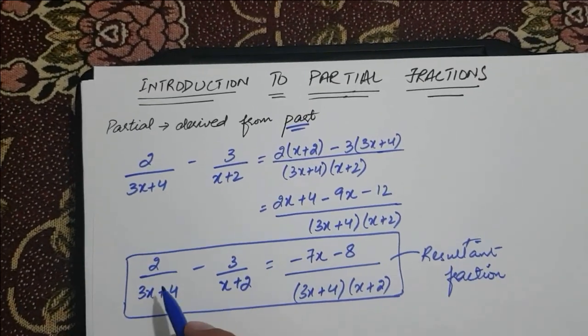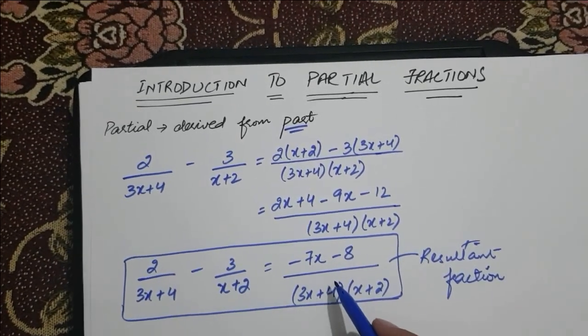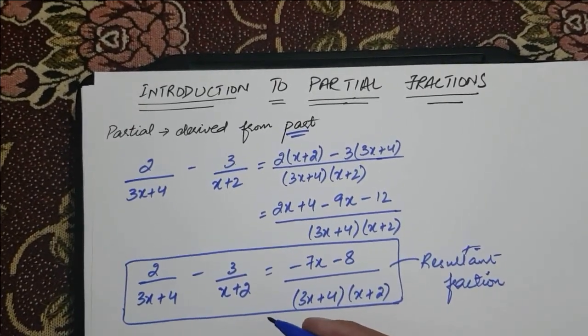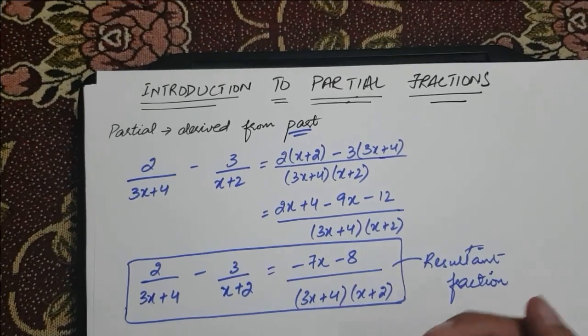Here, we have studied that the sum of two fractions is a resultant fraction. But now we will be going to study how the parts of fraction can be found from its resultant fraction.